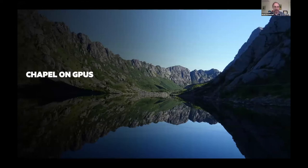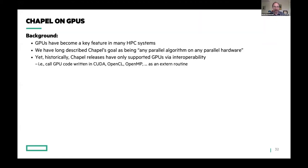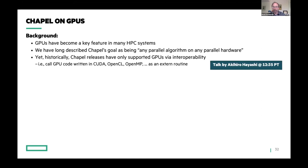The next two things are maybe the ones I'm most excited about. The first one is Chapel on GPUs, an effort being done by our team at HPE. As background, GPUs are becoming more and more of a key feature on many large-scale HPC systems, such as Frontier, which just took the number one slot in the Top500. We often talk about Chapel being about any parallel algorithm on any parallel hardware. But historically, the only way to use Chapel with GPUs has been through interoperability — writing your GPU code in CUDA or OpenCL or OpenMP and calling out to it from Chapel.